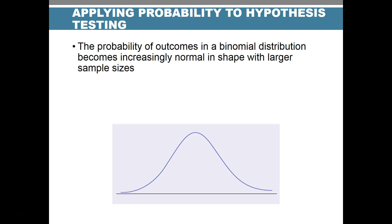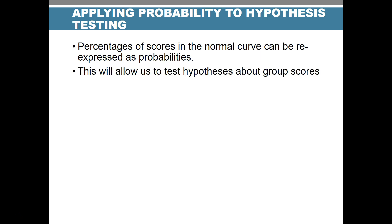Probability of outcomes in a binomial distribution becomes increasingly normal as we get a larger sample size — this is the central limit theorem. We also know that the percentage of scores in a normal curve can be expressed as probabilities, and we can use z-scores to convert to probabilities under the normal curve. These two pieces of information allow us to test our hypotheses about group scores.